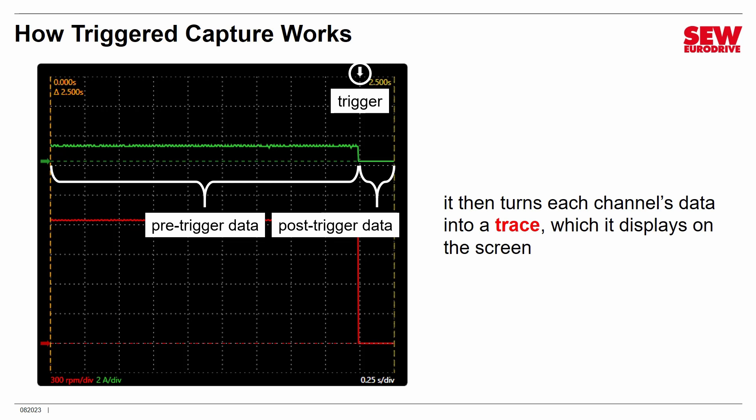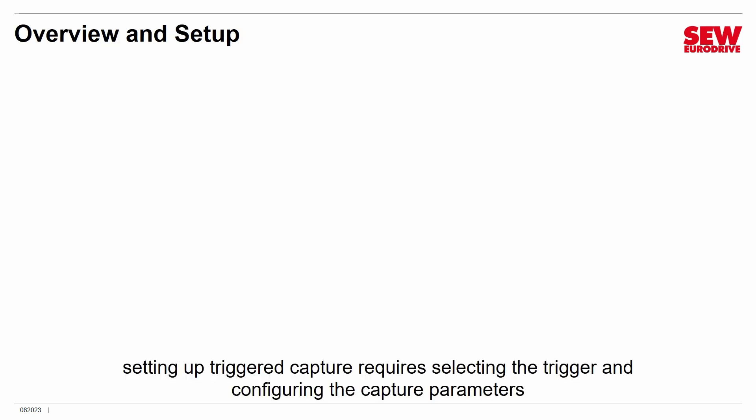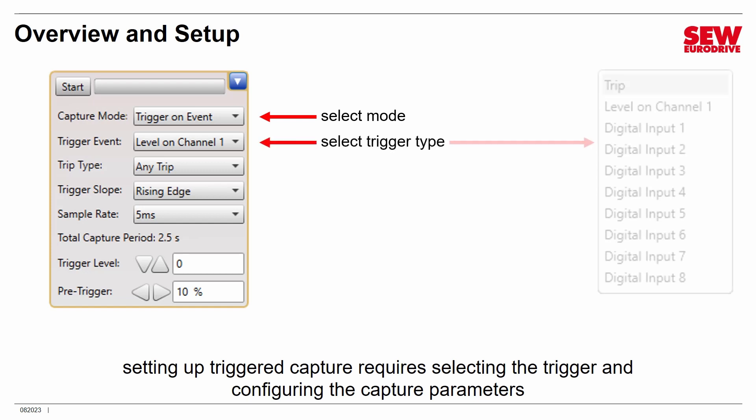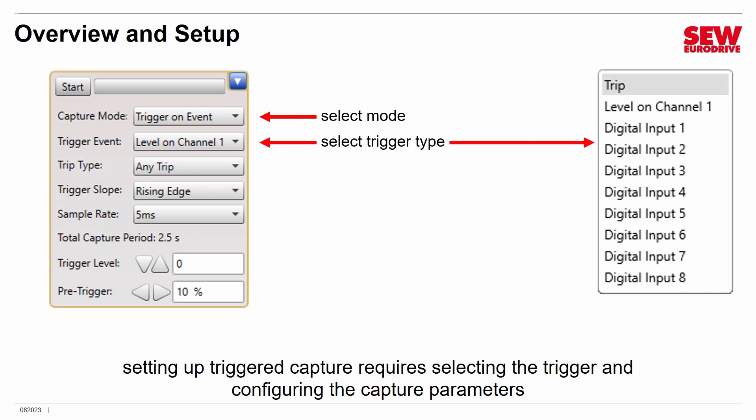Let's talk about how you set up triggered capture — it takes a fair amount of setup. You have to select the trigger and configure the capture parameters, done in the lower right side of the screen. First, pick trigger on event mode — make sure you're not in continuous run mode. Then pick the trigger type; there are several: a trip (that's a fault), a specific level on the parameter being monitored by channel 1, or the digital inputs rising or falling. Note that some options will gray out depending on the trigger type you pick.